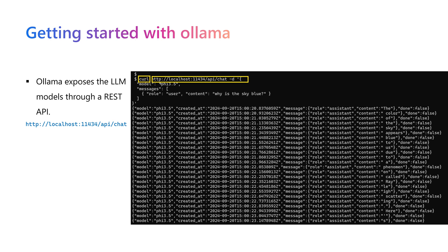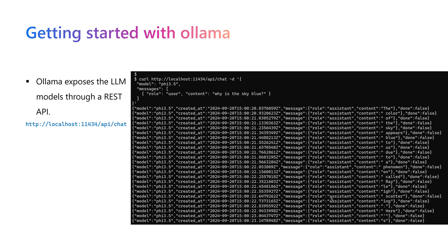In this example we send a query request to the /api/chat endpoint, specifying the model name (phi3.5) and the user message — for example, 'why is the sky blue?' — and we get the response from the model. Once we have that REST API, we can build client applications to consume it.